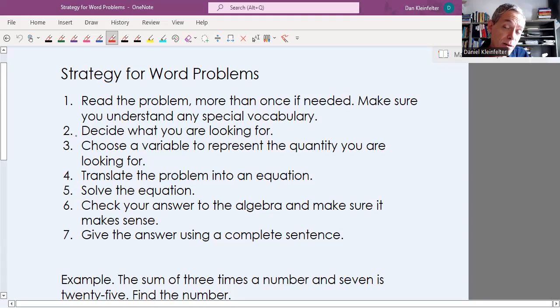Then in step two, we're going to decide what you are looking for. What is the question asking you to find? Typically, you want to choose the variable to be whatever that is you are looking for. The hardest step usually is step four here where we're translating the statement of the problem into an equation. There will help you to think about what has to equal what. Remember that an equation is a statement that two things are equal. So what two quantities have to equal each other that will help guide you in forming the equation.